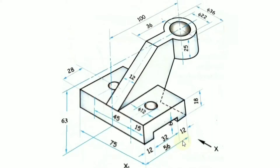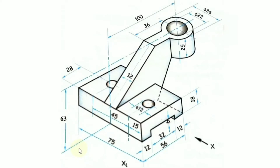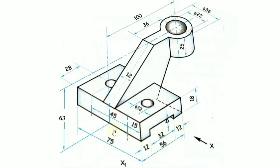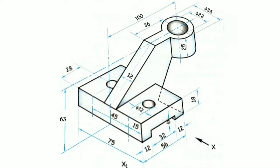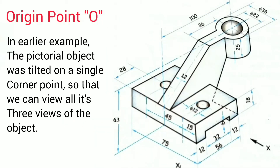In this pictorial object, all three views can be visualized. In the direction of X we see the front view, from the top we get the top view, and from the left-hand side we get the left-hand side view. The horizontal edges are equally inclined to the horizontal plane at 30 degrees, and the front portion is tilted forward so the top view can also be seen. The whole object is tilted at a single origin point from which we start the diagram.